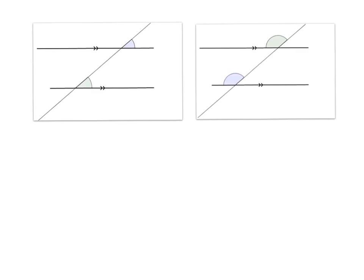We're going to look at some properties of angles on parallel lines. Parallel lines are lines like these here, which are always exactly the same distance apart from each other.